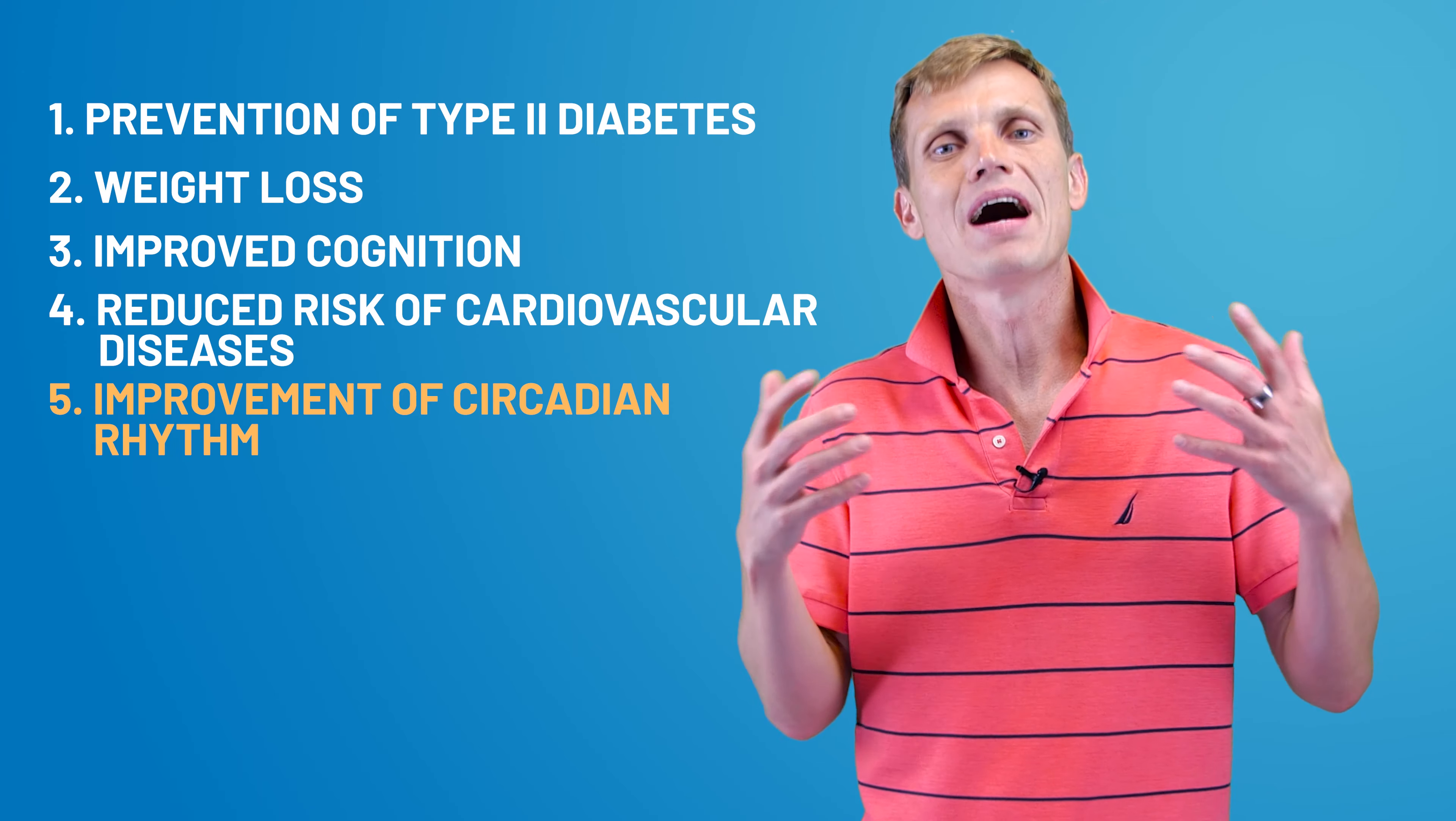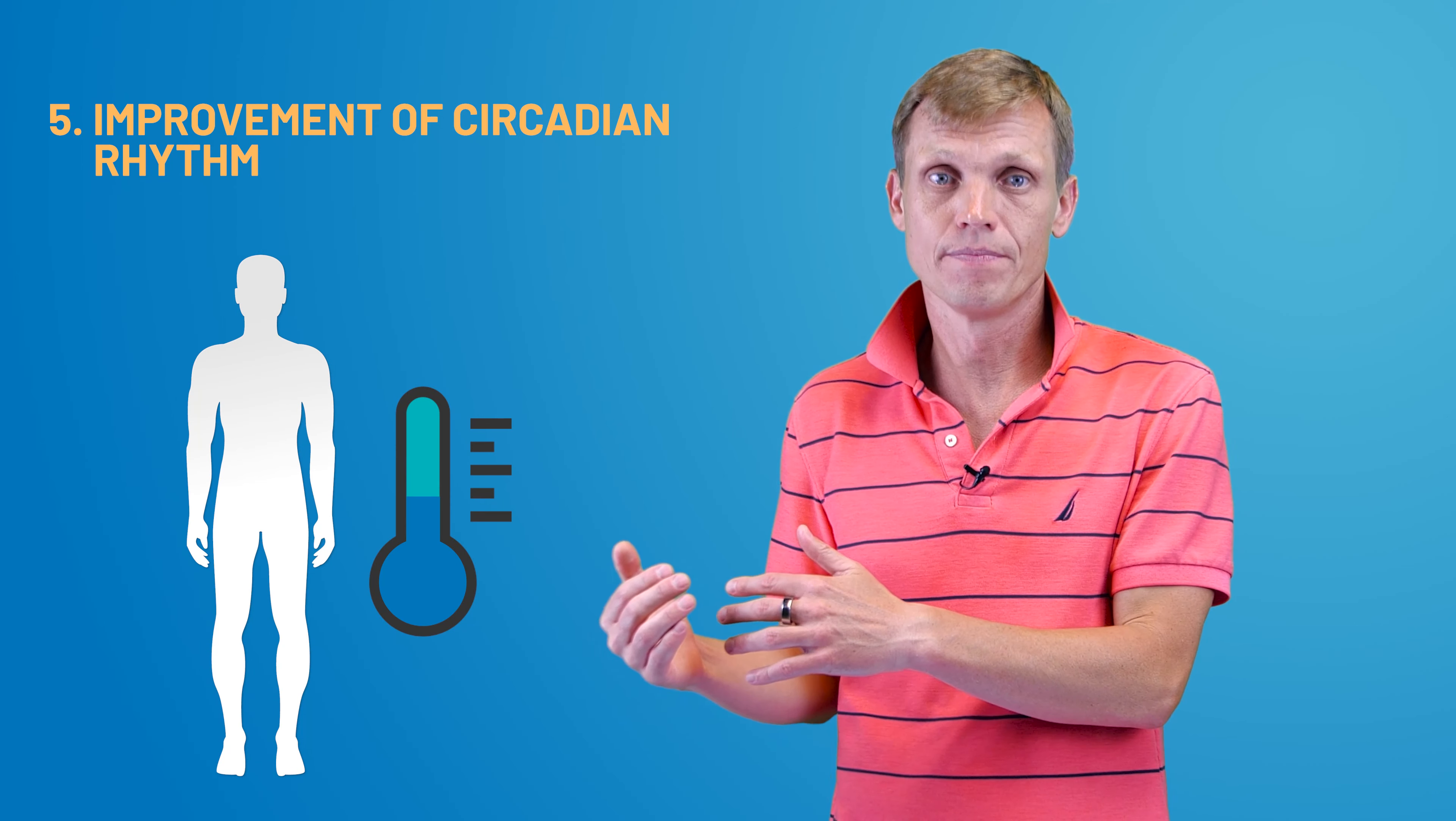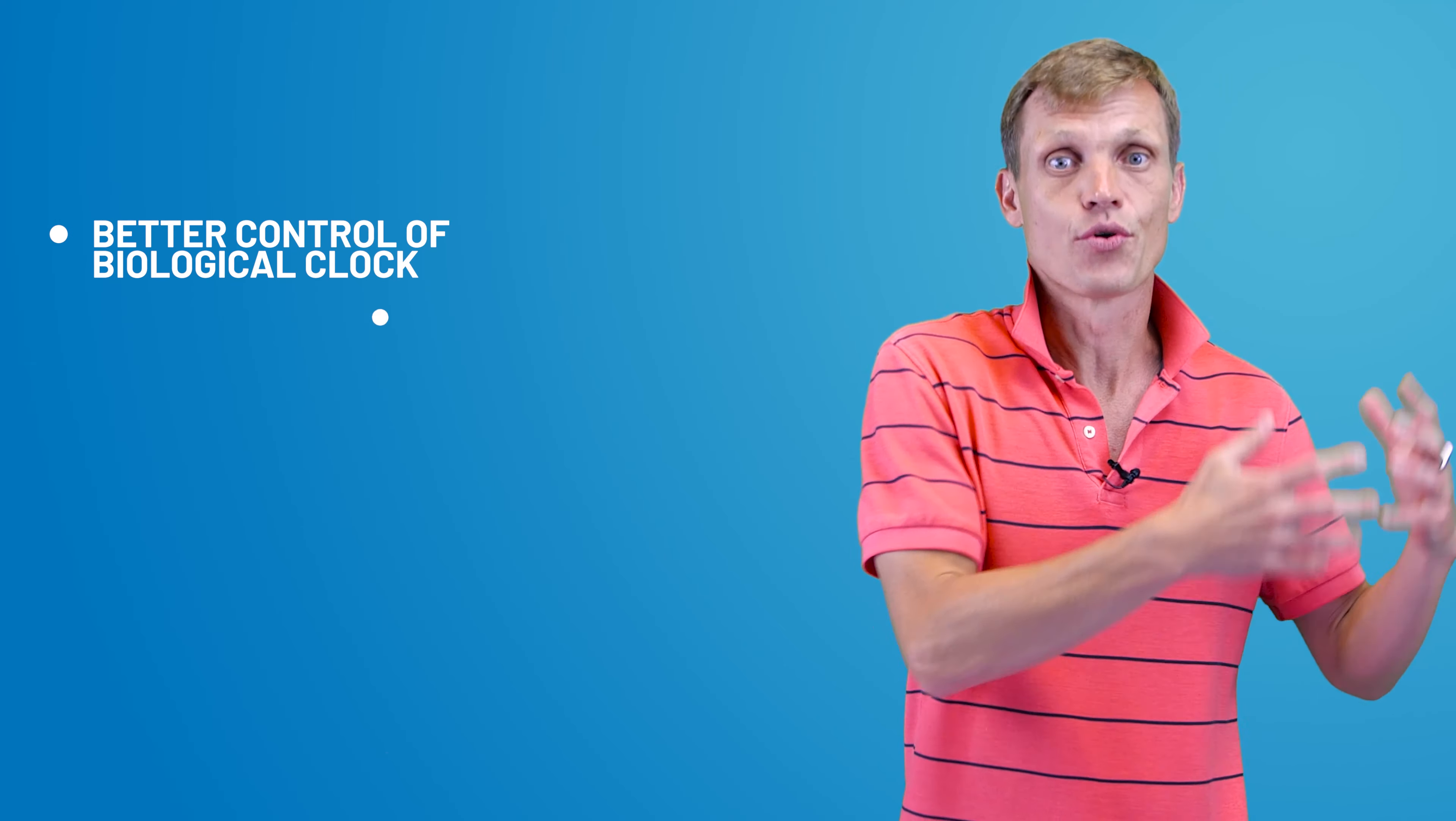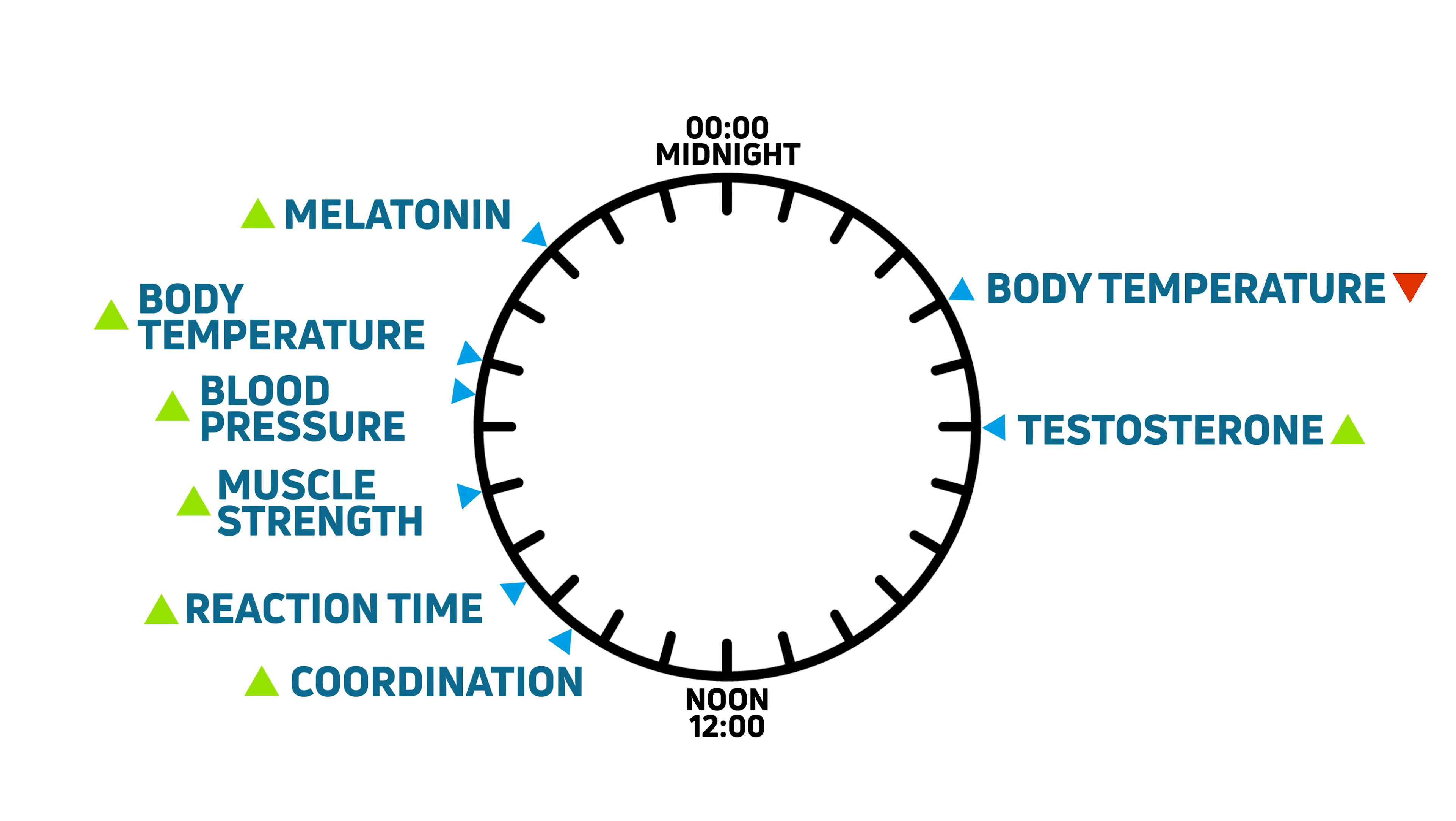Number five, improvement of the body's circadian rhythm. Since fewer calories are burned, less inflammation occurs, and the overall body temperature becomes slightly lower. Our biological clock is heavily influenced by our thermal metabolism. The result is better control of our biological clock and circadian rhythm, and subsequently better regulation for the release of hormones, such as cortisol in the morning and melatonin in the evening.